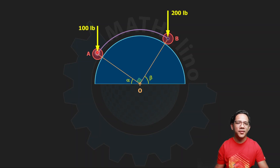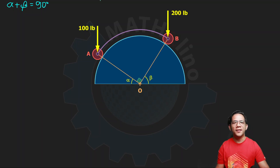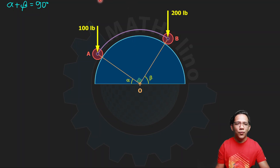The first thing to do is to determine the relationship between these two angles. We know that a straight line is 180 degrees and we have 90 degrees here. Therefore, the sum of alpha and beta is 90 degrees — that is 180 minus 90. So beta equals 90 degrees minus alpha.